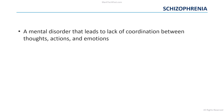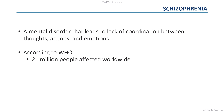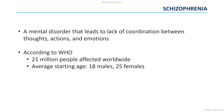Schizophrenia is a mental disorder where the function of some brain regions is out of balance, leading to the lack of coordination between thoughts, actions, and emotions. According to the World Health Organization, about 21 million people suffer from this mental disorder worldwide. On average, males start to get affected by schizophrenia at 18 years old, while females at 25 years old, and overall the disorder is prevalent among males.